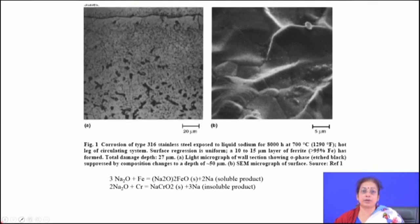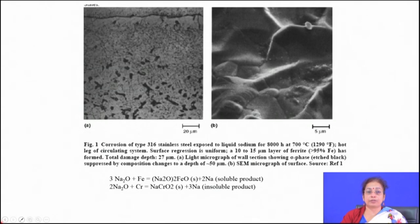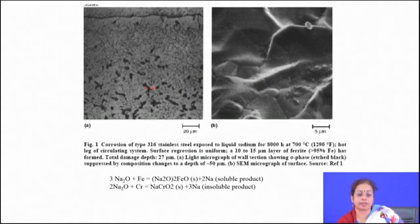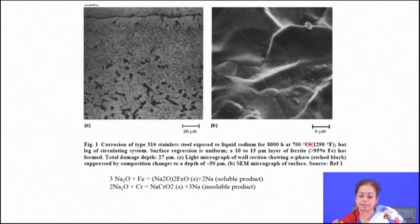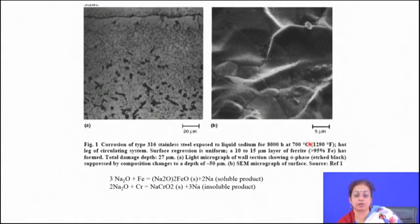On the surface of an embrittled component, there is a lot of roughness due to material removal and dissolution. You will also find a lot of micro-crack formation, and grain boundaries are enriched with the liquid metal. For example, 316 stainless steel exposed to liquid sodium at 700°C for 8000 hours shows this kind of problem — the surface gets roughened, material is leached away, and the component is embrittled with significant loss of ductility.